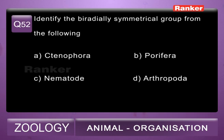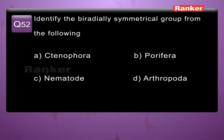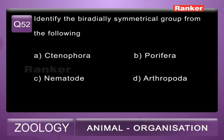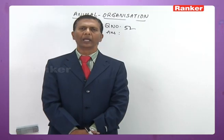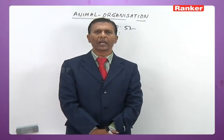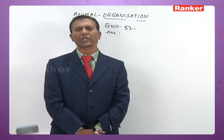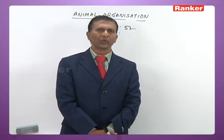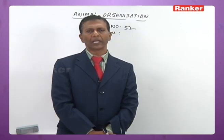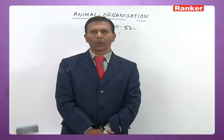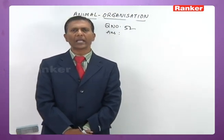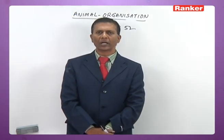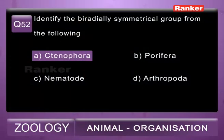Question 52: identify the biradially symmetrical group from the following — A) Ctenophora, B) Porifera, C) Nematoda, D) Arthropoda. Ctenophores are biradially symmetrical, where the animal is divisible into identical halves by two vertical planes perpendicular to each other, cutting along the oral-aboral axis. The 52nd question correct answer is A, Ctenophora.